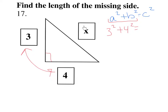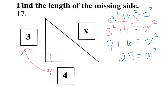Since this is the longer side, x is going to replace c. Now we simplify: 3 squared is 9, 4 squared is 16, and 9 plus 16 is 25. We're not trying to find x squared — we're trying to find x. So to remove the square, the opposite operation is the square root. The square root of x squared is x, and the square root of 25 is 5. So x equals 5.